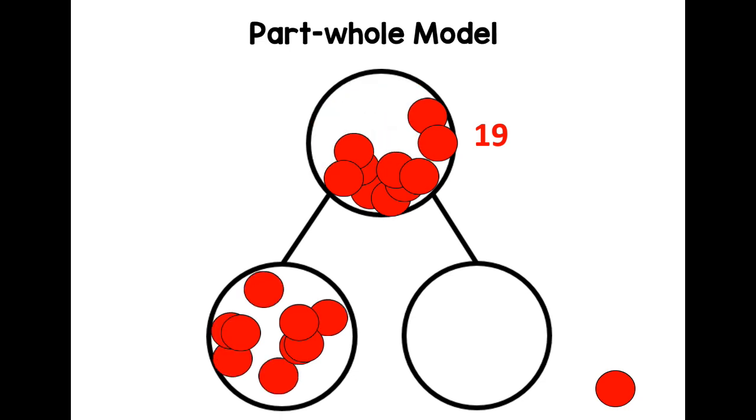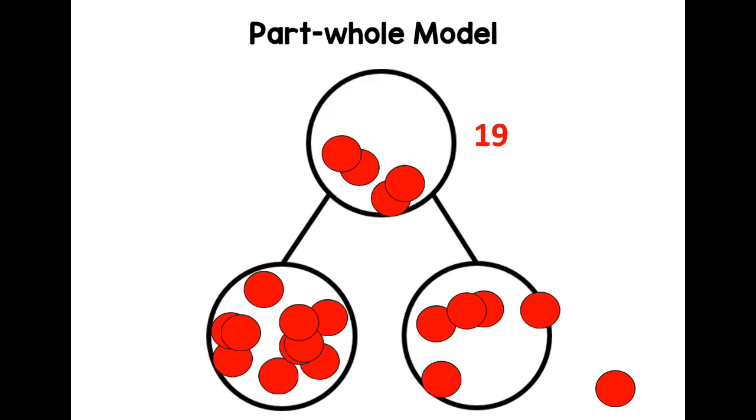Remember with number of the day we always put 10 as one of our parts, but you could have 12 as one of your parts or you could see if you have two as one of your parts what the other one would be. And there we go, I've moved 10. And how many are going in the other circle? 10 is the part, 9 is the part, and 19 is the whole.